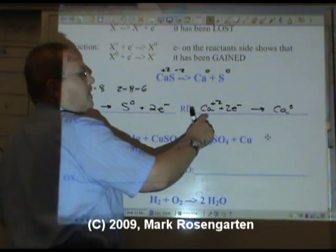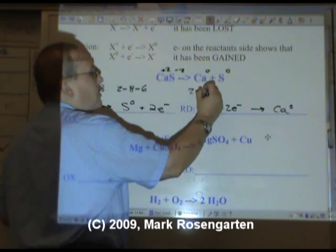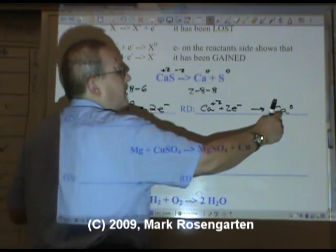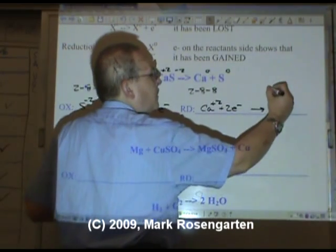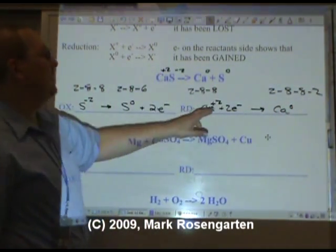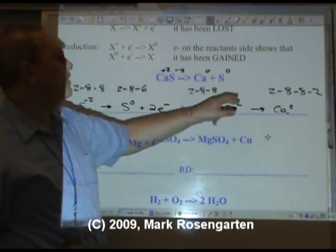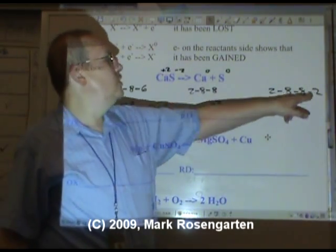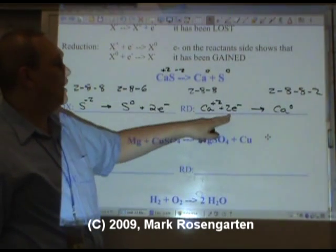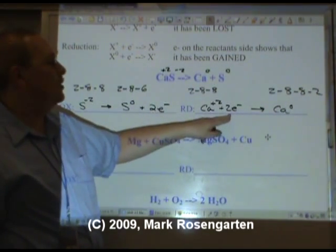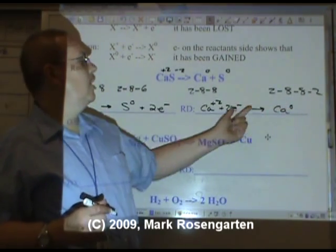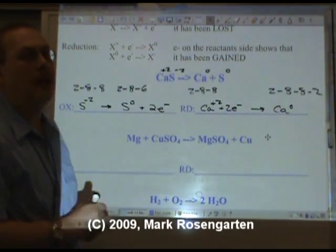Calcium plus two has a configuration of 2-8-8. Calcium zero has a configuration of 2-8-8-2. So how did you get from plus two to zero? By gaining two electrons. We put those electrons on the left side to show that they have been gained and so that the law of conservation of charge is obeyed.